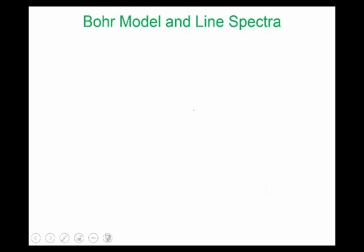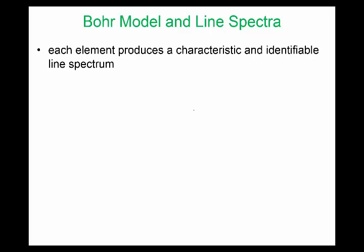This tutorial covers the Bohr model and line spectra using the Bohr model. The Bohr model is named after a Danish physicist named Niels Bohr, who proposed that energy is quantized on discrete energy levels. The Bohr model is represented by rings, where the quantized energy levels — or principal energy levels — correspond to those rings.